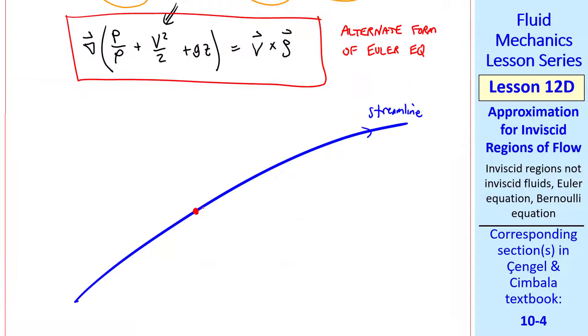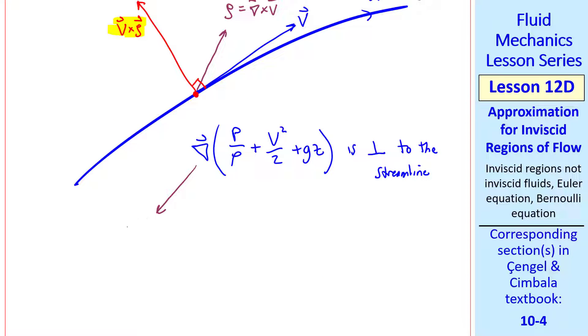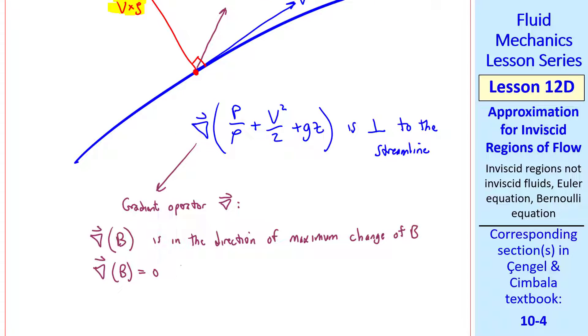Now consider a streamline. We know that at any point on a streamline, by definition v is tangent to the streamline. It's hard to draw this three-dimensionally, but zeta equal del cross v will be in some other direction, and then the vector v cross zeta will have to be perpendicular to the streamline, by definition of the cross product. In other words, v dot zeta is perpendicular to both v and zeta. Since this is the same as the right-hand side of our equation, and we're dealing with vectors, then the gradient of that quantity is also perpendicular to the streamline. Now I want you to think back to the definition of gradient. From your math class, you may remember that the gradient of any quantity b is in the direction of maximum change of b, and a corollary to that is that the gradient of b is zero along curves or surfaces of constant b.